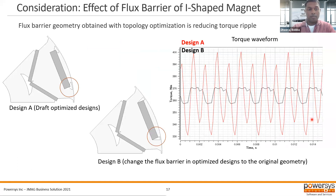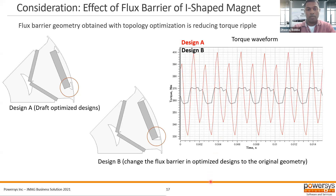Here are the torque waveforms. Once the final geometry is obtained, this is looking at the sensitivity of the shape of those barriers on the top magnet. These are slightly modified, and we can see that the torque ripple reduces further. Design A is the red torque waveform, and design B is the black one. These are things we have to manually check to understand sensitivity to changing those shapes — sometimes we might get even better results.